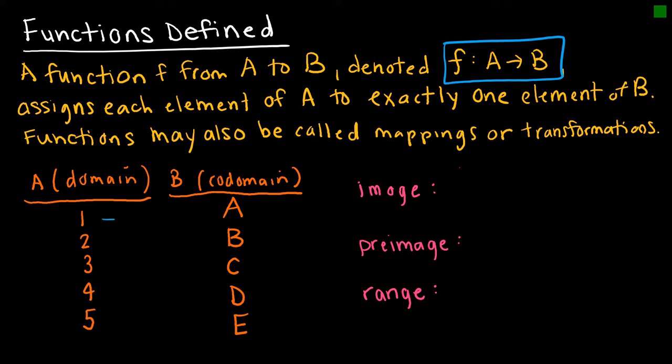every element of A must be mapped to some element of B. This would be considered a function. You might also hear of a function being called a mapping or transformation, but mostly we just call them functions.